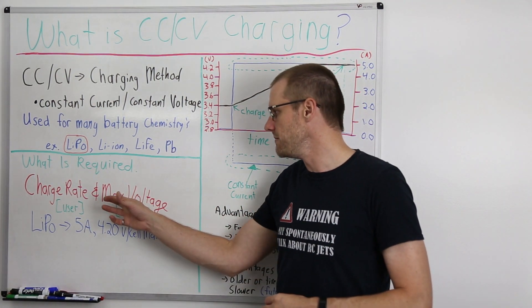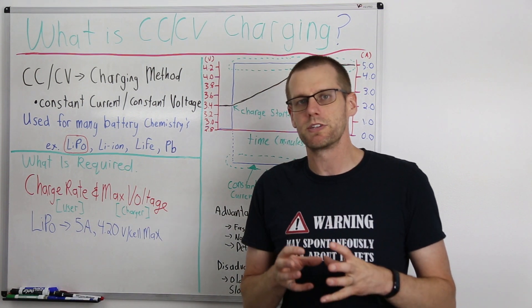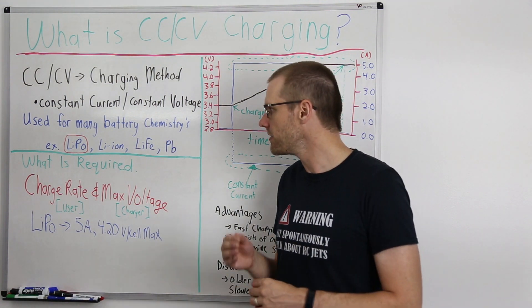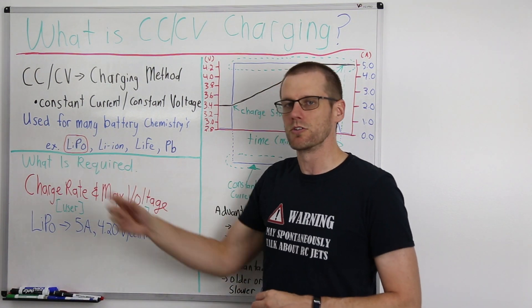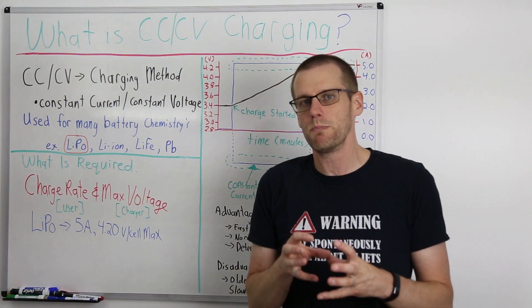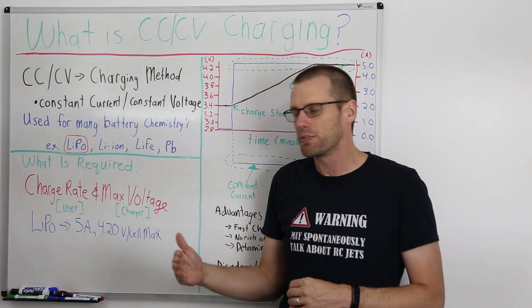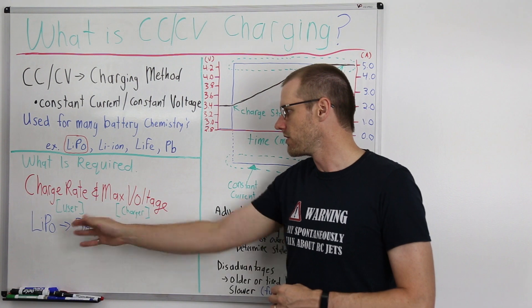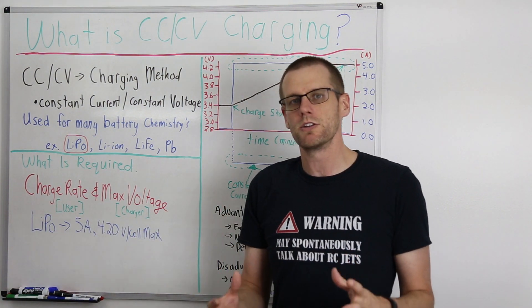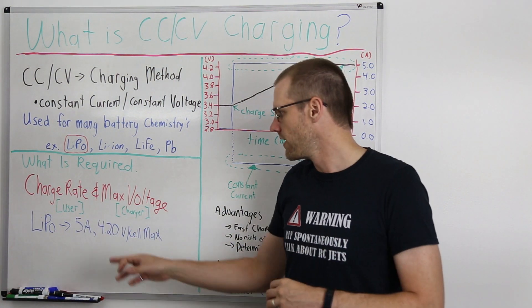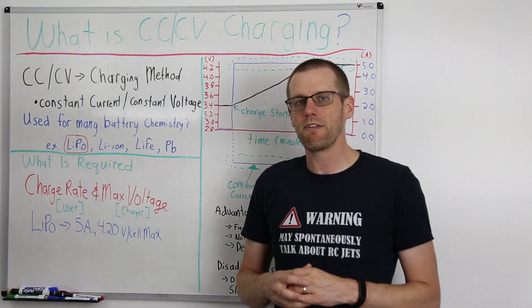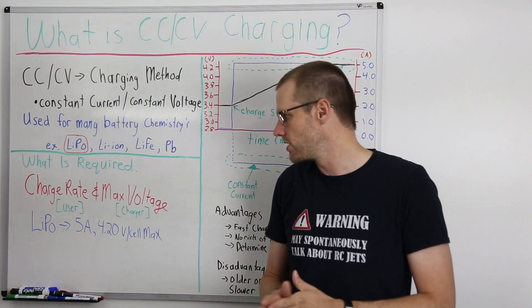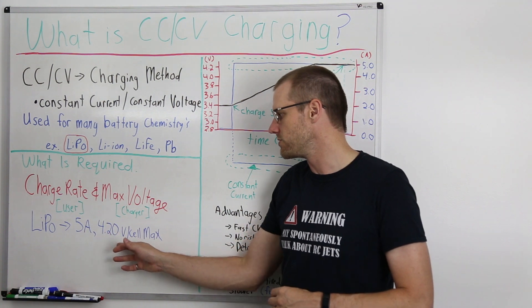Then the next item here is the maximum voltage per cell, a lithium polymer battery pack. This is why this is circled. We're going to be looking at specifically lithium polymer battery packs throughout the example today. So in our case, we're looking at the LiPo battery pack. We're going to assume a constant charge of 5 amps, and we're going to have a maximum peak voltage per cell at 4.2 volts.